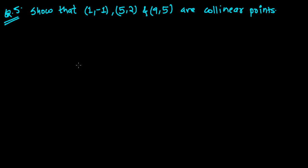Hi friends, welcome once again to another problem of coordinate geometry related to the distance formula. The question says that the points (1, -1), (5, 2), and (9, 5) are collinear points.